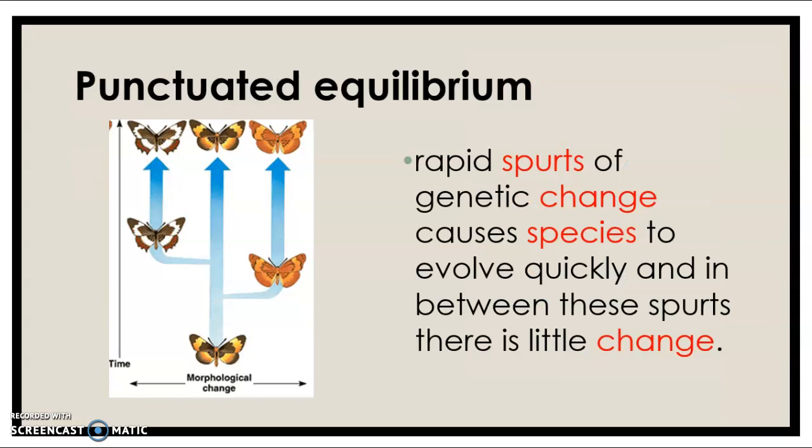Punctuated equilibrium, on the other hand, is when rapid spurts of genetic change cause species to evolve very quickly, and in between these spurts there's very little change. A lot of times this can happen because one of these genetic changes provides a real advantage in the environment as opposed to the typical genetic sequences and phenotypes seen. You might see two or even three different species occur from these. If the environment suddenly changes, we might see these rapid spurts of change occurring in populations, eventually leading to new species.